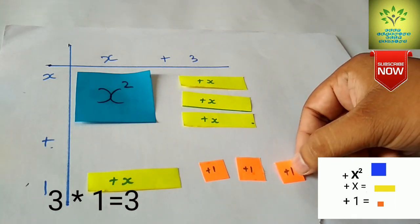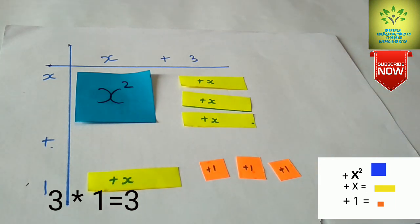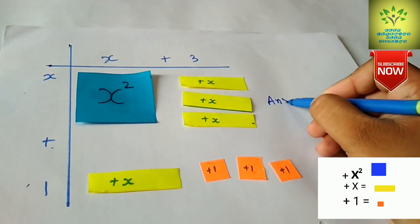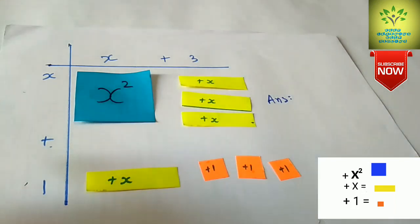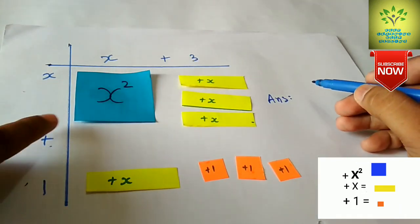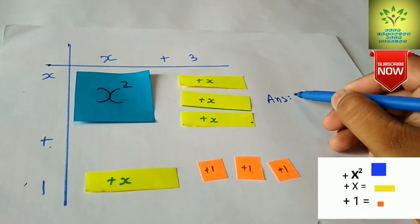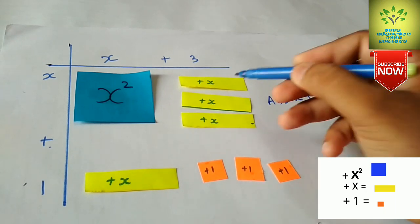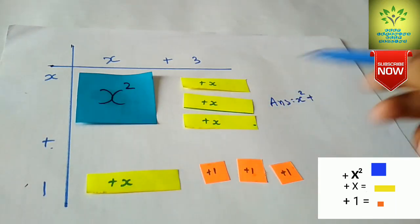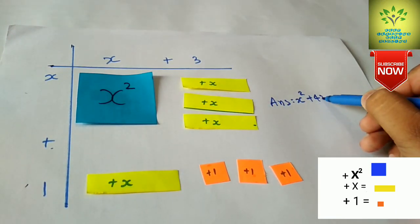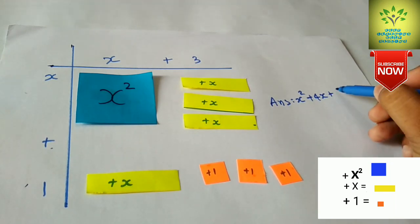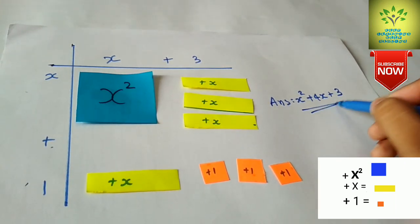This represents the answer for (x+3)(x+1): the arrangement shows x squared plus 4x plus 3.